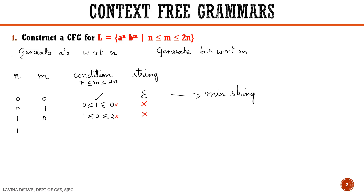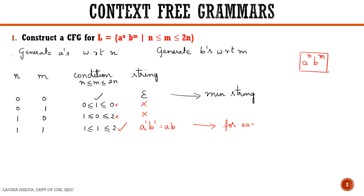Next I will take n = 1 and m = 1. Here we can see it will be 1 ≤ 1 ≤ 2, so the condition is satisfied. The string generated is a^n b^m. With n = 1 and m = 1 that is a^1 b^1, so the string 'ab' is generated. We can tell that for each a, one b is generated. This is a pattern.